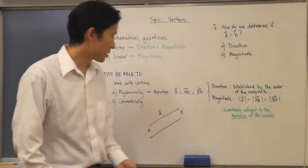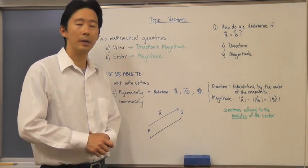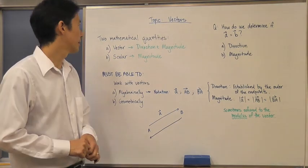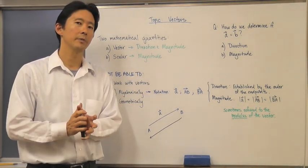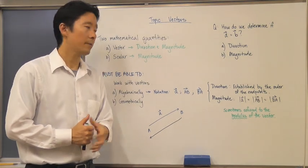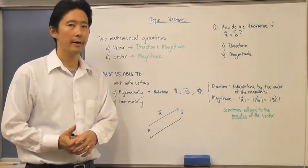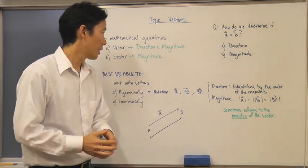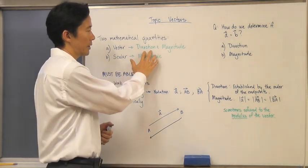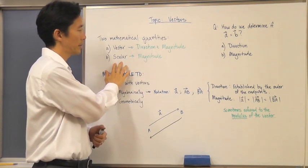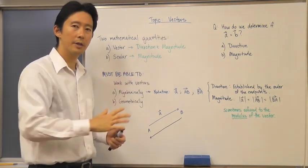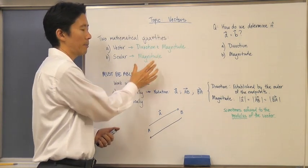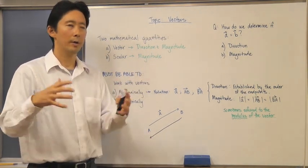Let's start with this topic called vectors. In mathematics, there are two mathematical quantities we're going to be dealing with: the vector and the scalar. We need to be very clear from the beginning about the difference between the two. A vector is going to include direction and magnitude, whereas a scalar is only going to have magnitude.